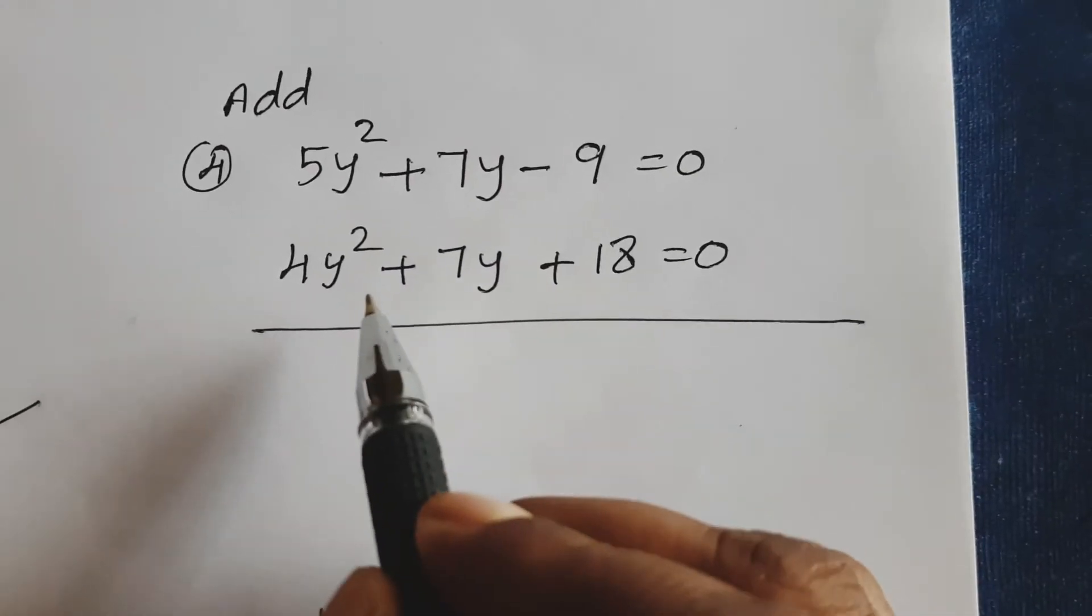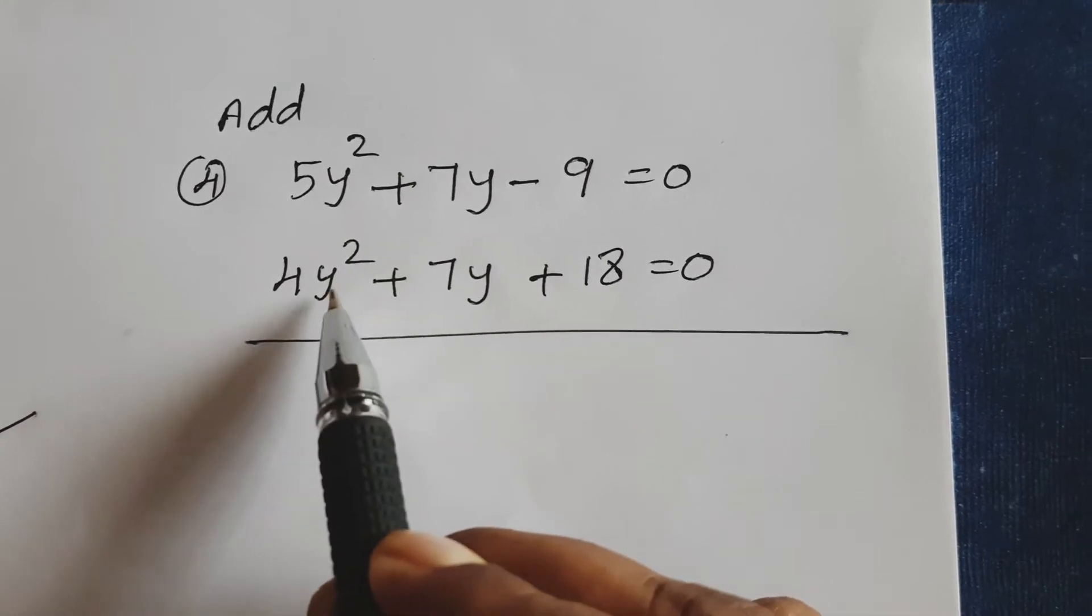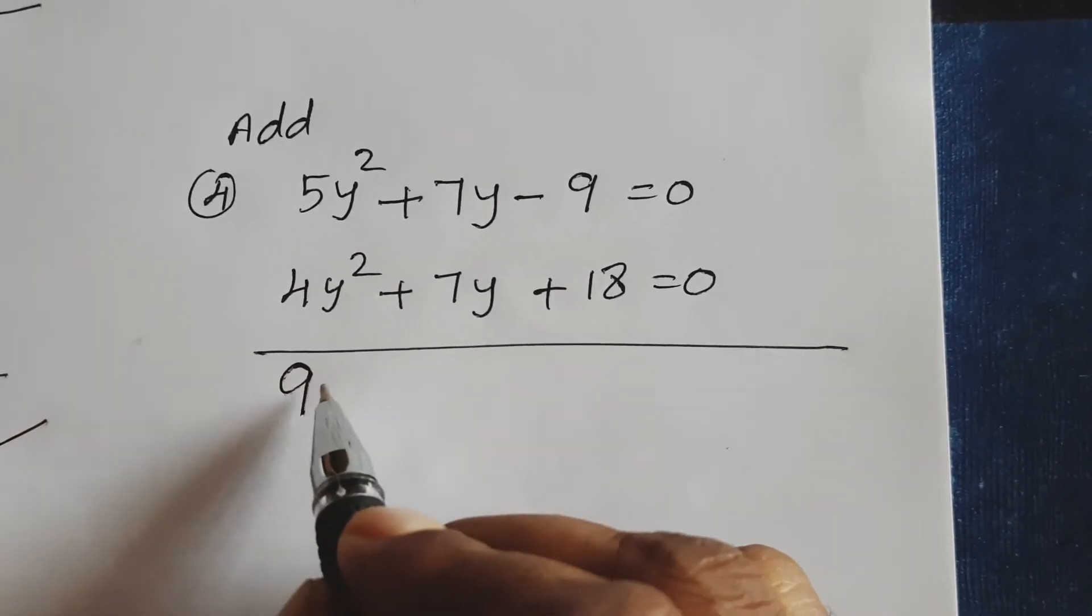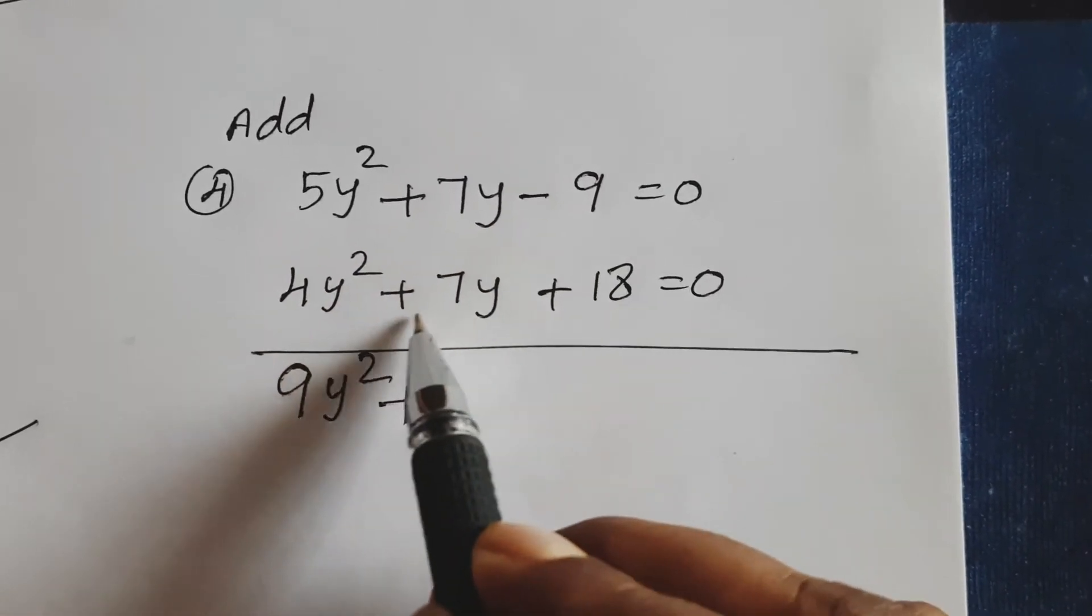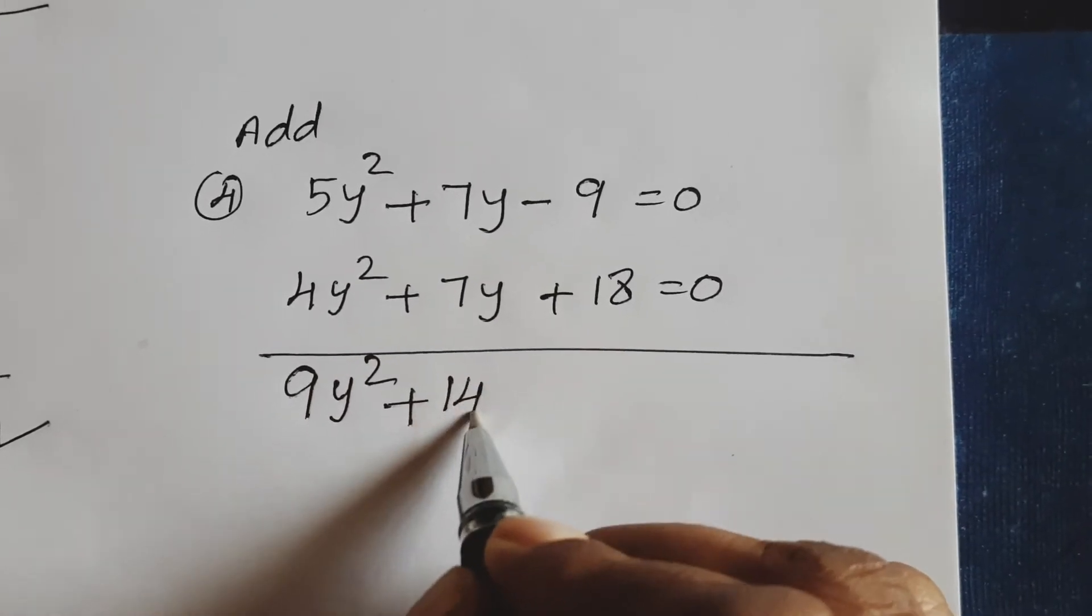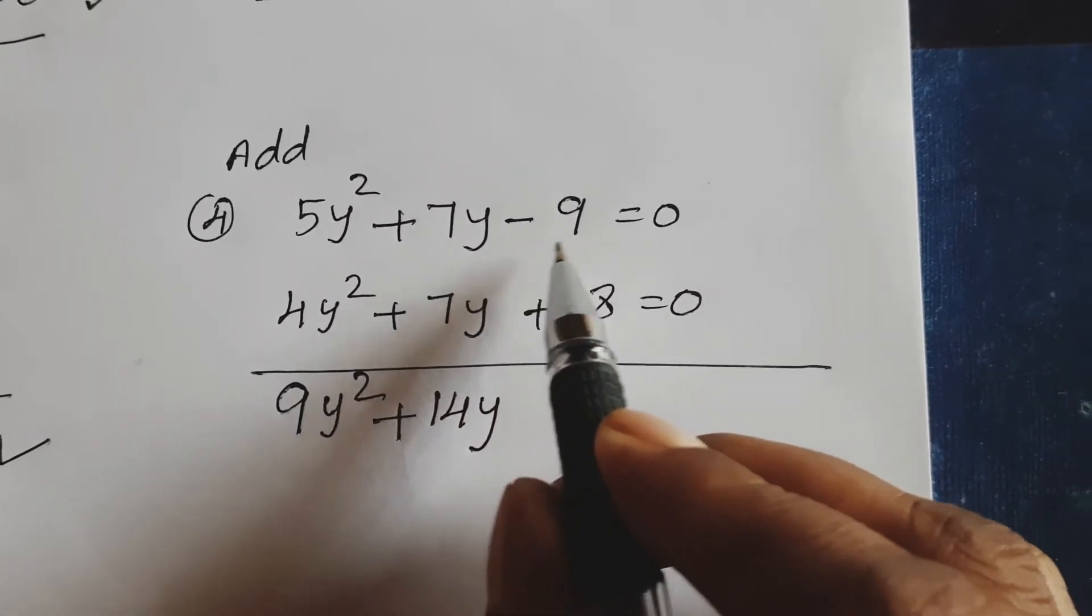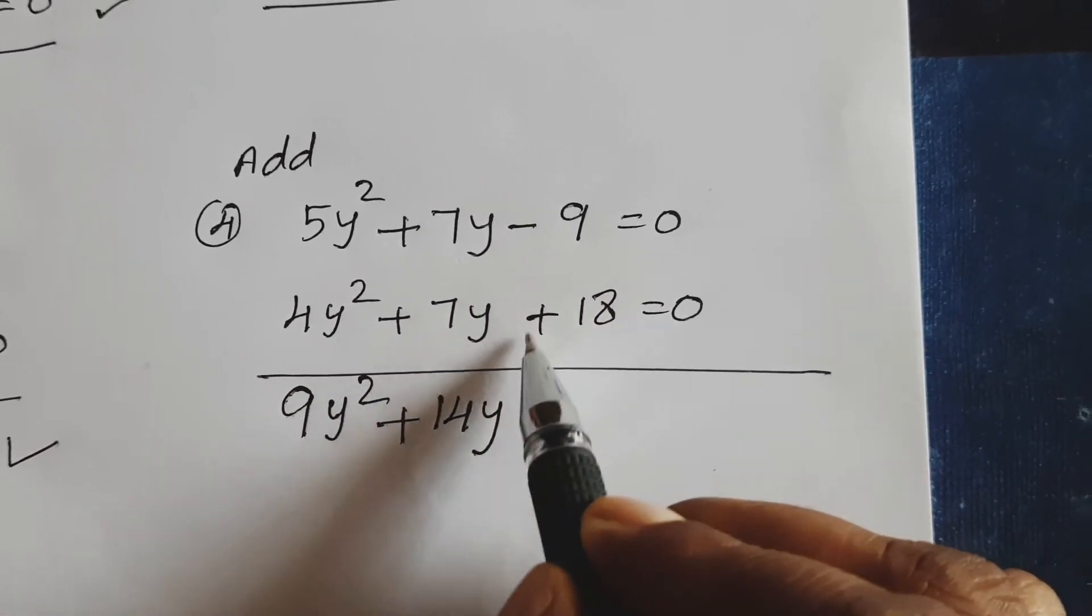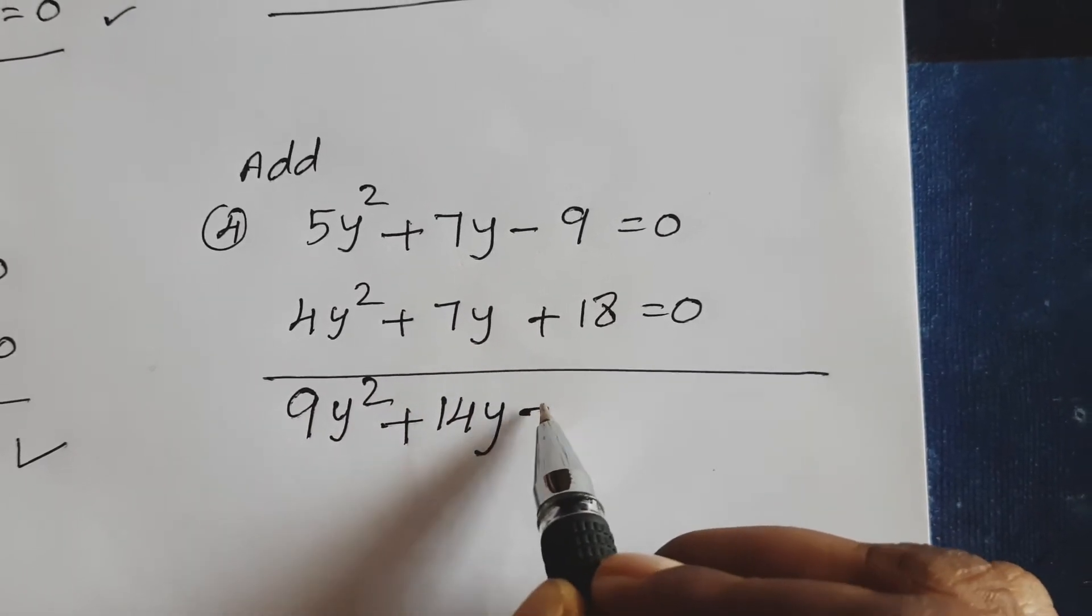Next expression: 5y² plus 4y² is 9y², plus 7y plus 7y is 14y. Here minus 9 plus 18, so positive value is higher.